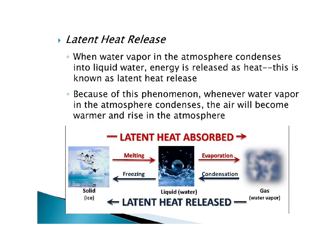Latent heat release: when water vapor in the atmosphere condenses into liquid water, energy is released as heat. This is known as latent heat release, and it happens for all substances. As air rises, it's warm and holding lots of moisture — because warm air holds more moisture, its saturation point is higher. As it rises to the top of the troposphere, it cools. As it cools, it condenses. The water vapor condenses into liquid water, and that condensation energy is released as heat — that's latent heat release. Because of this, whenever water vapor condenses, the air becomes warmer and rises in the atmosphere.